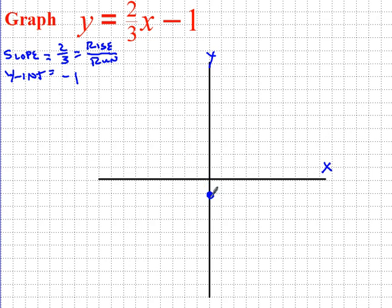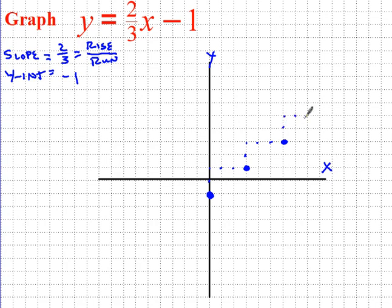I have my first point where the line crosses the y-axis at negative 1. From this point I'm going to use my rise and run to find my next point. My rise is 2 — so I go up 2 — and my run is 3 — so I go over 3. There's my next point. I can do it again: up 2, over 3. Connecting these points gives me a straight line.